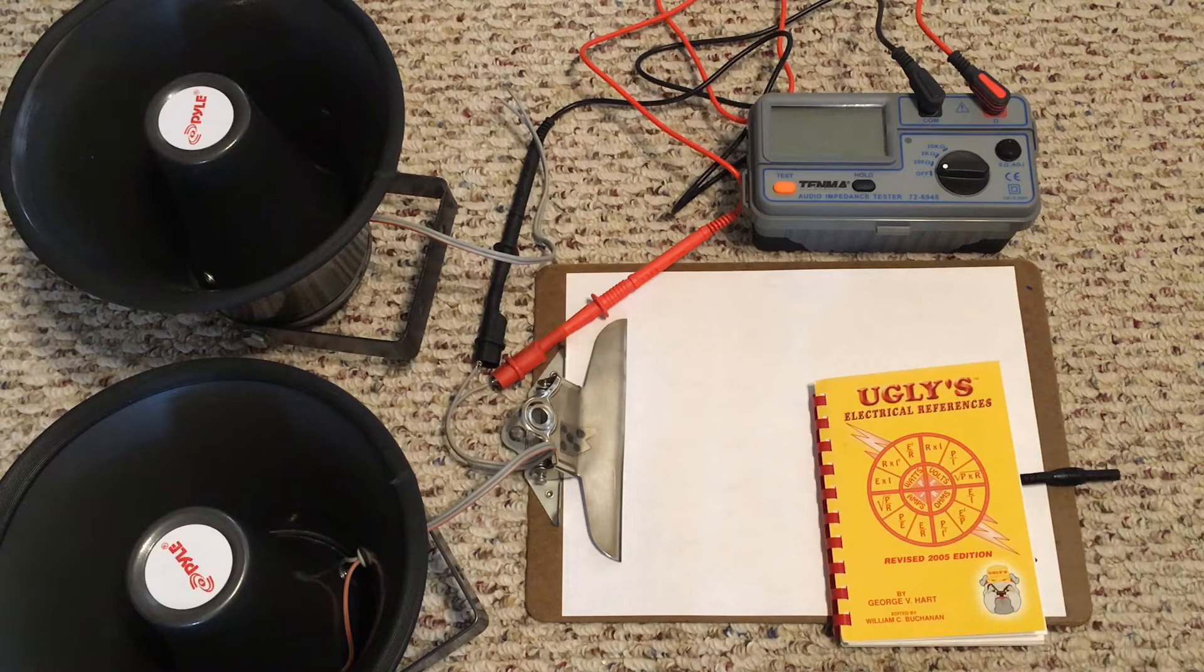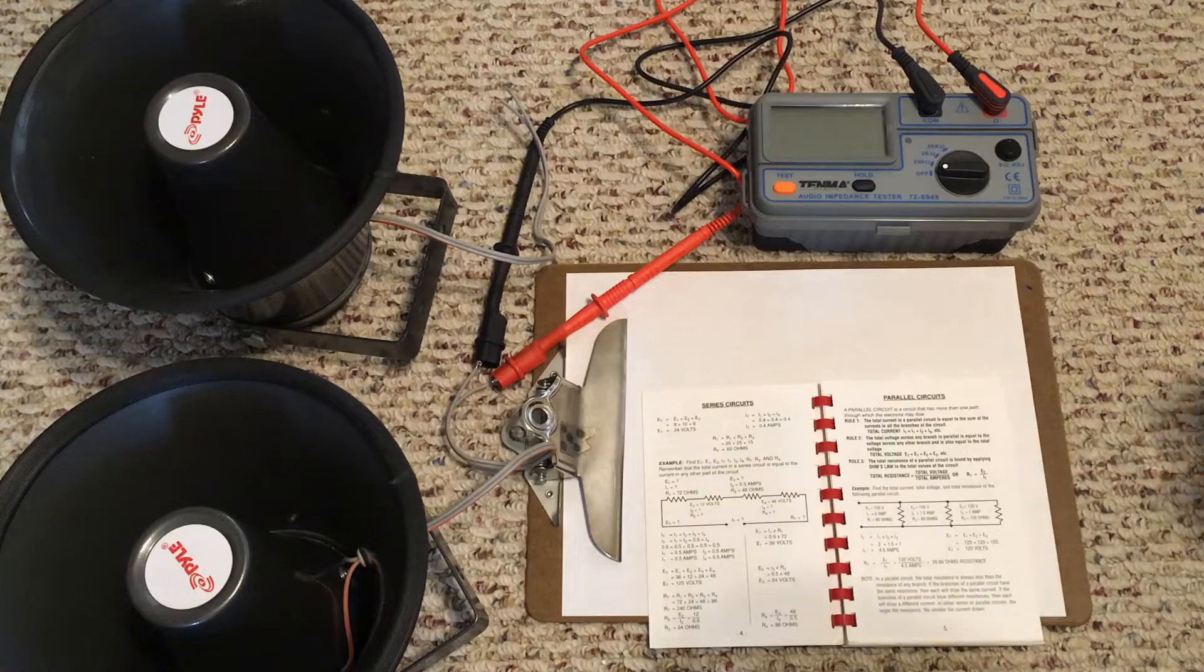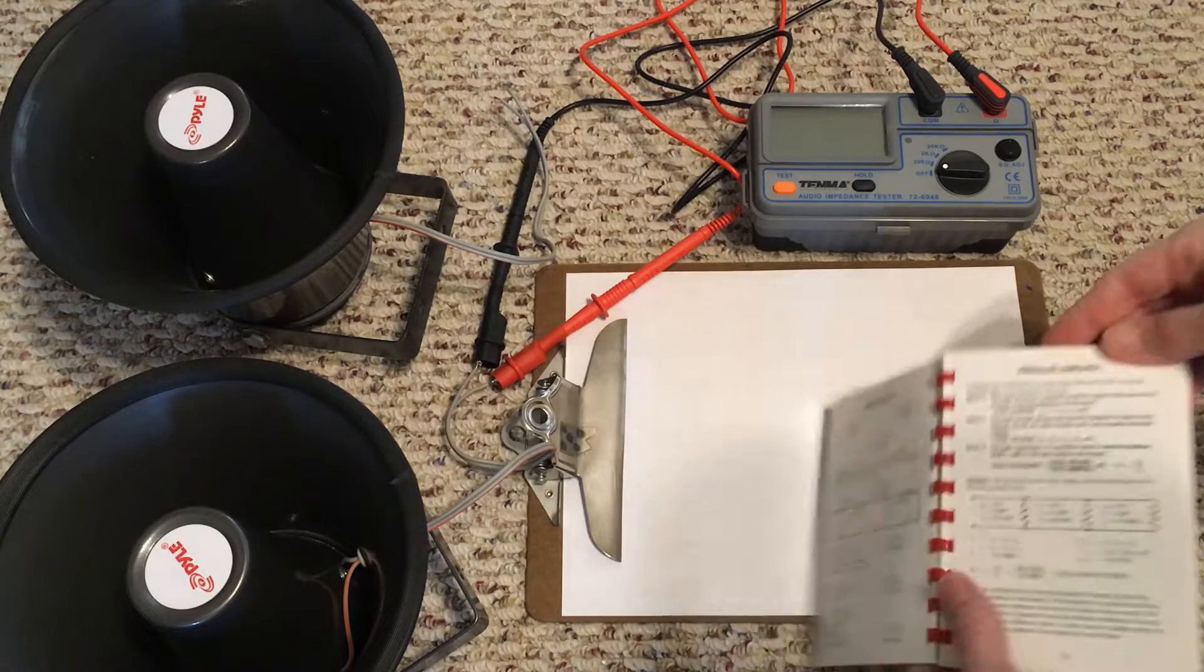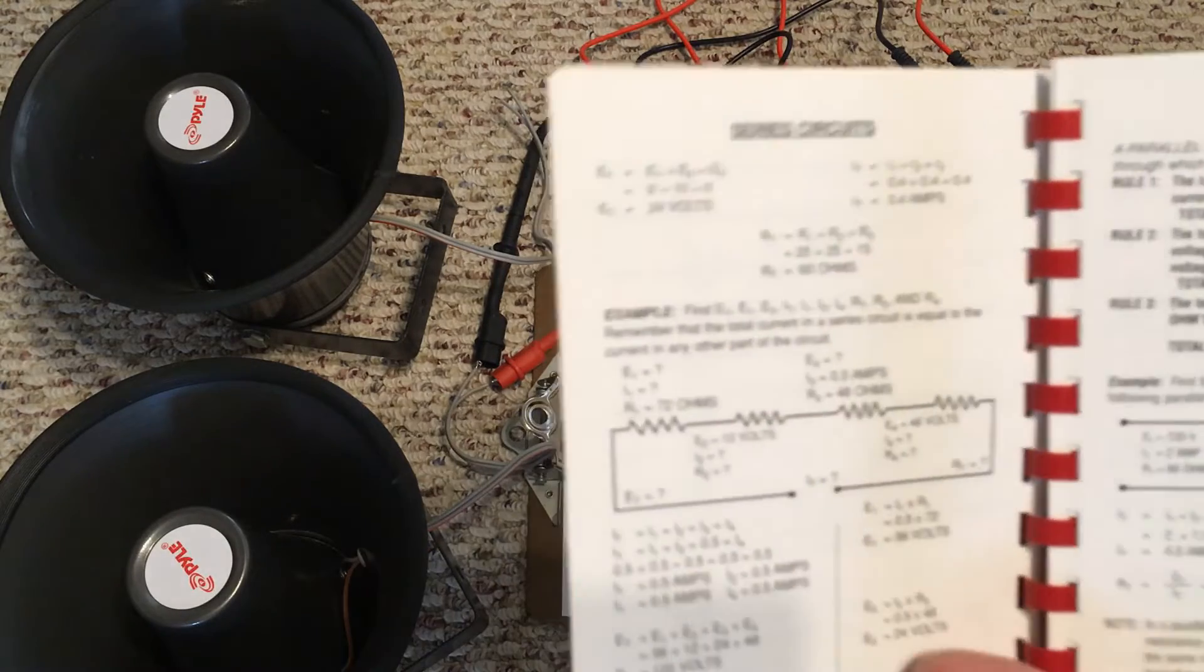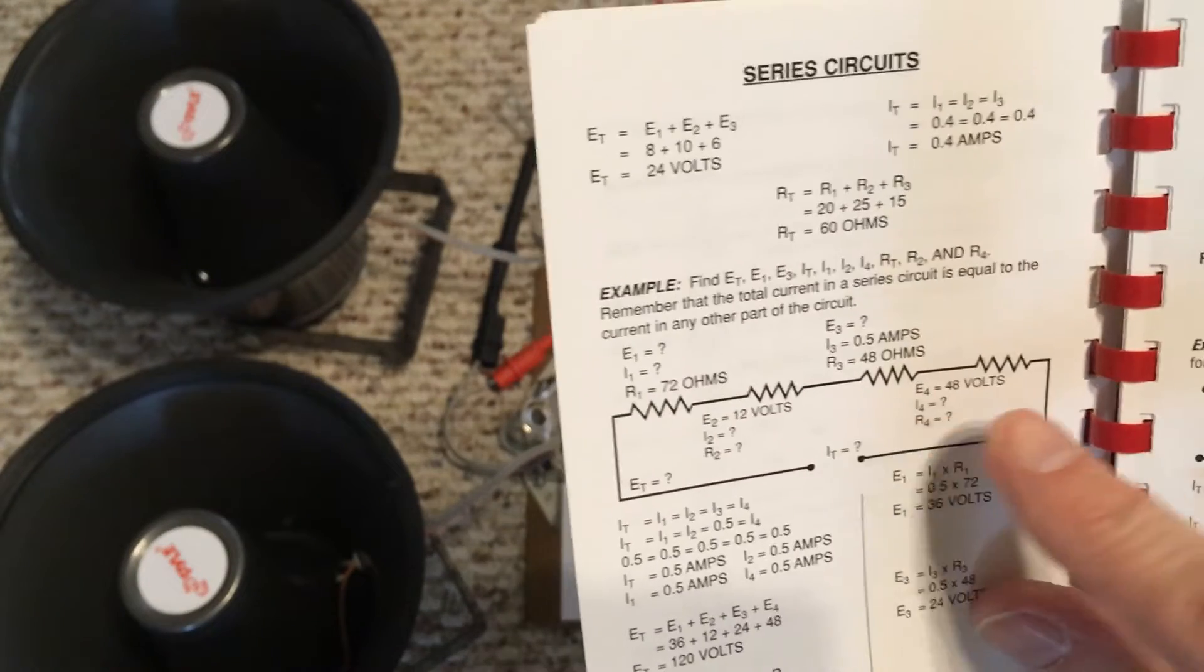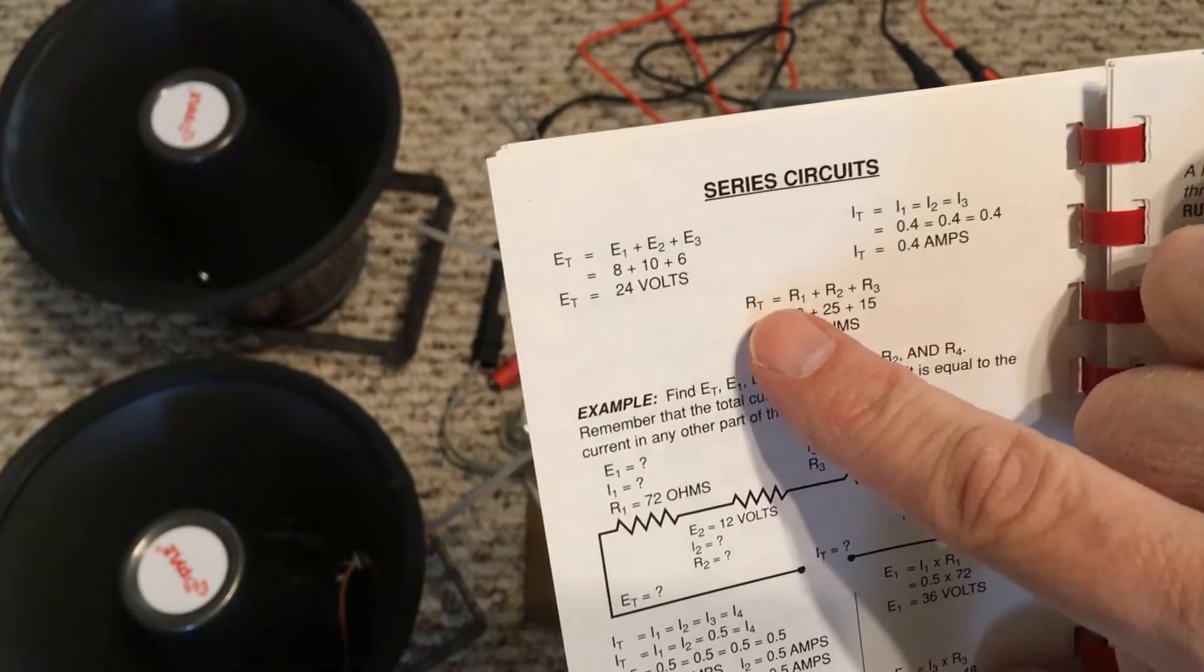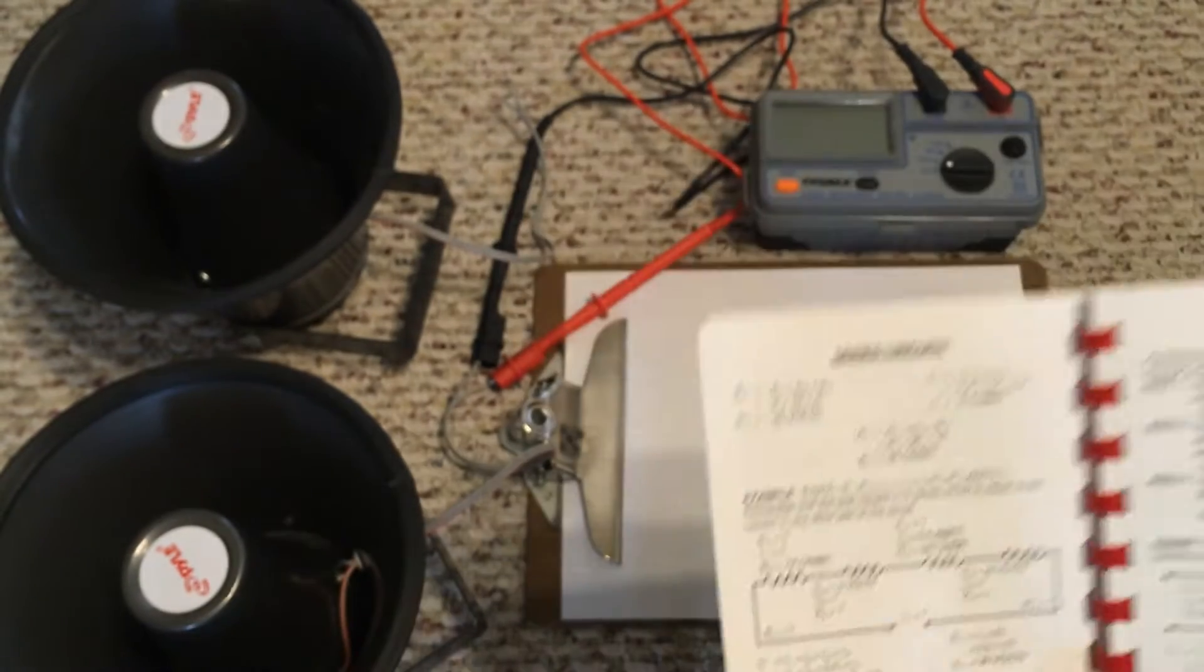This handy little reference, Ugly's Electrical Reference. So we can be in series when you have more than one thing where you've got a resistor, resistor, resistor, and when you are like that you just add them up.